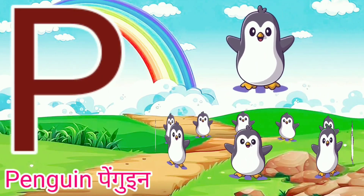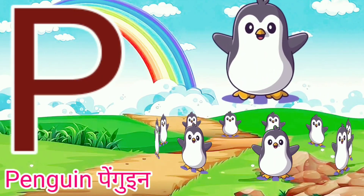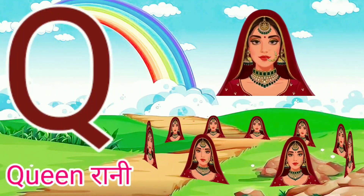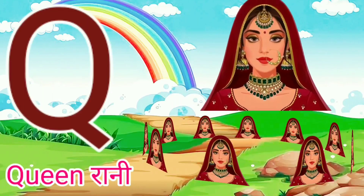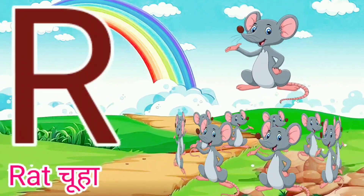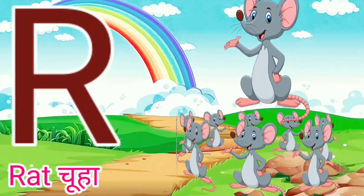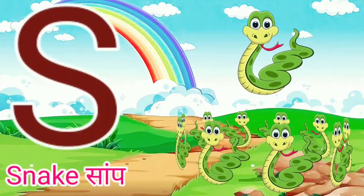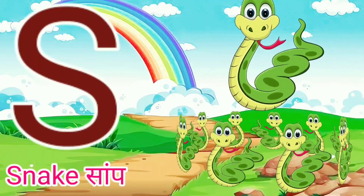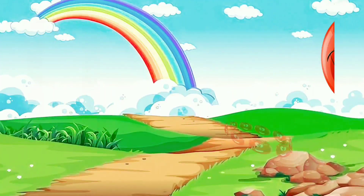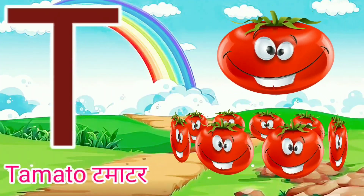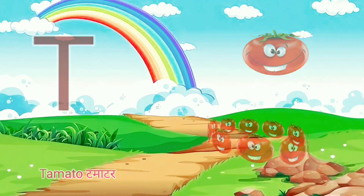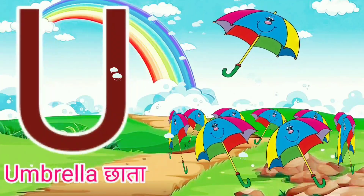P for penguin. Q for queen. R for red. S for snake. T for tomato. U for umbrella.